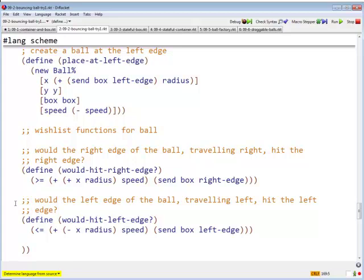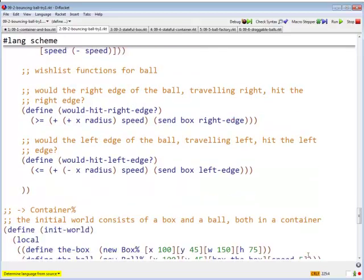Similarly, we can ask, would the ball hit the left edge? So again, here's the ball. It is traveling left. The ball is at position x. So its leading edge is at x minus radius. And again, we add the speed to that. If we add the speed to that, that tells us where the ball, where the left edge of the ball is going to be in one tick. If that is less than the left edge of the box, then we would have hit the left edge. And that's all there is.